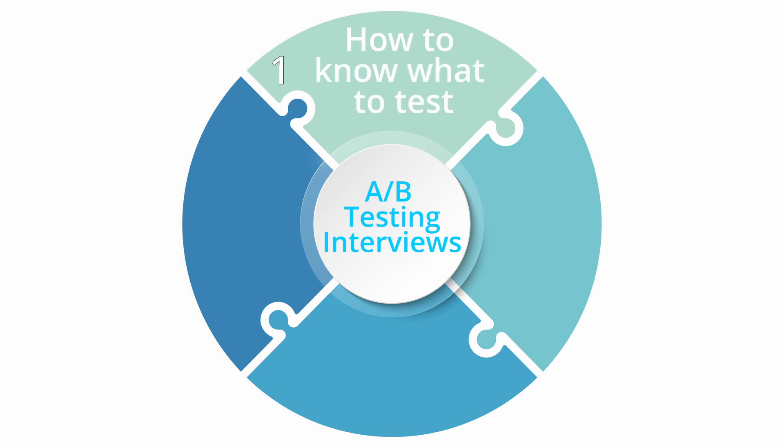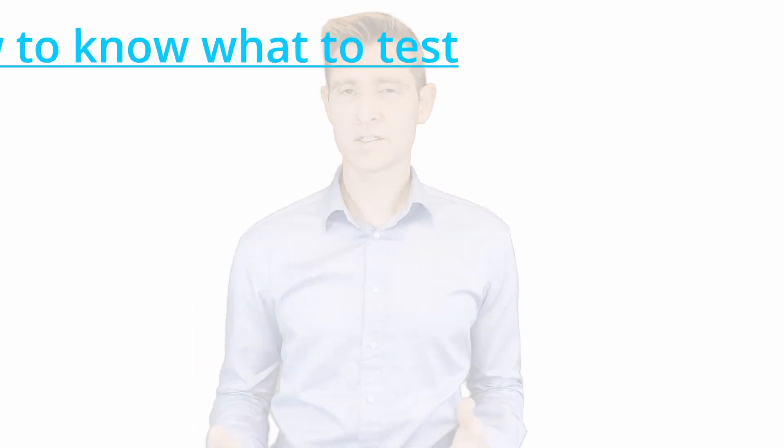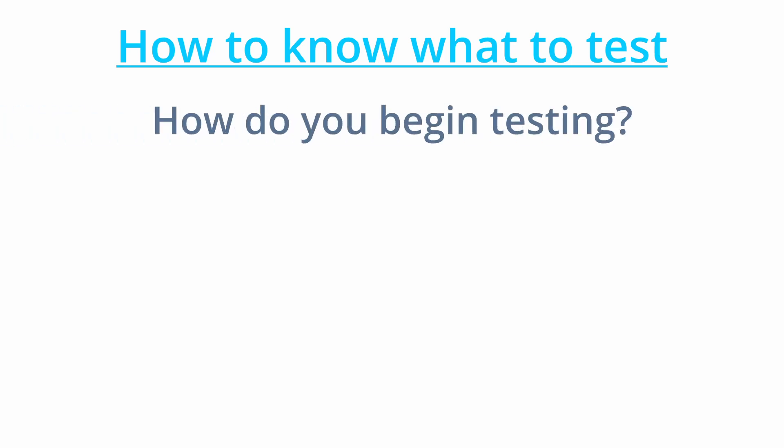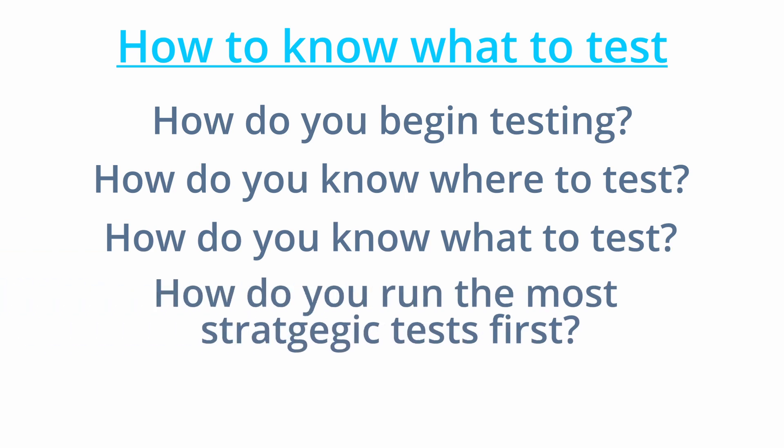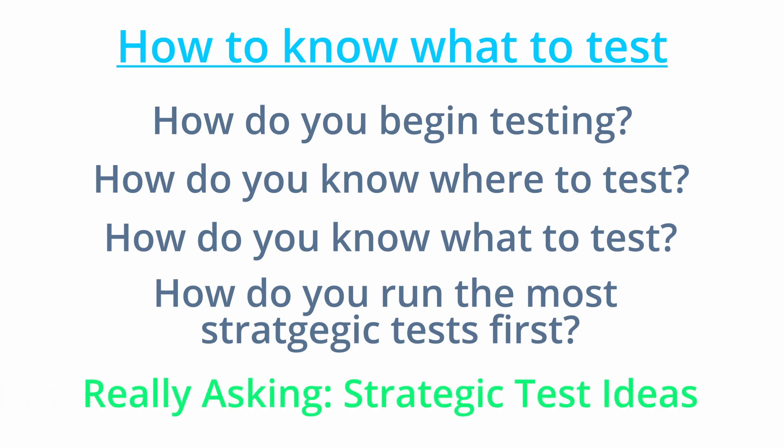The first category is how to know what to test. There's a variety of questions you might ask or be asked in this category — things like how do you begin testing, how do you know where to test, how do you know what to test, or how do you make sure you run the most strategic test first. There are four things you always need to be talking about: analytics, your testing strategy, qualitative data, and your previous test results.